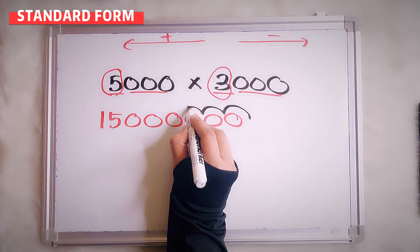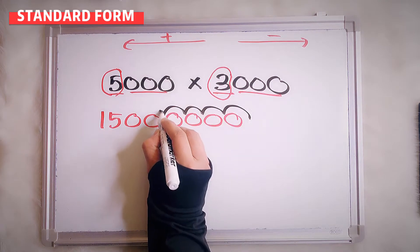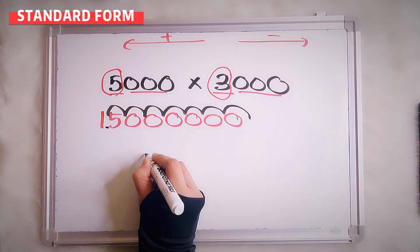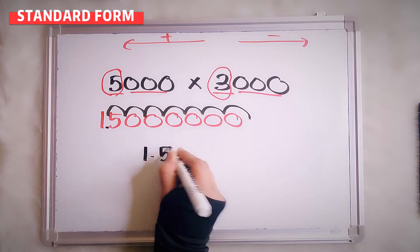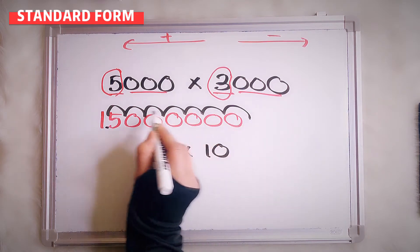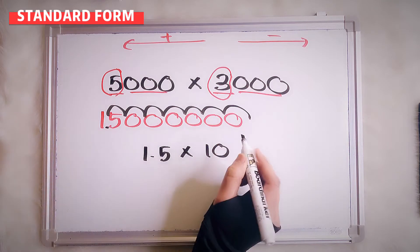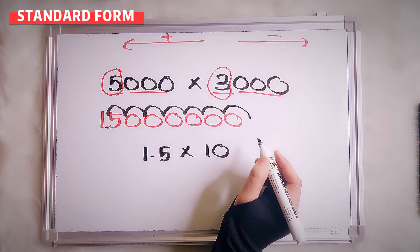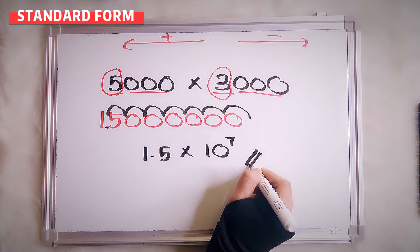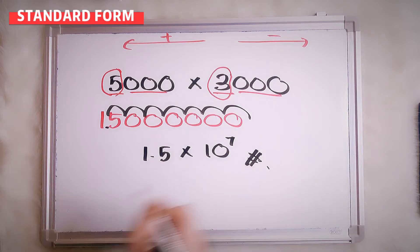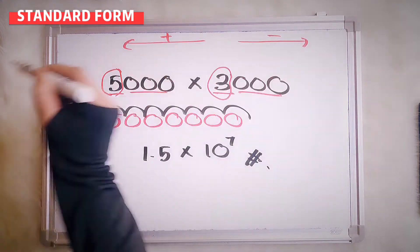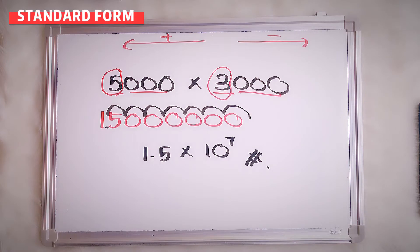Now count: 1, 2, 3, 4, 5, 6, 7. So that means 1.5 multiplied by 10. We move 7 times, so it will be power of 7. It's positive because we move to the left side.